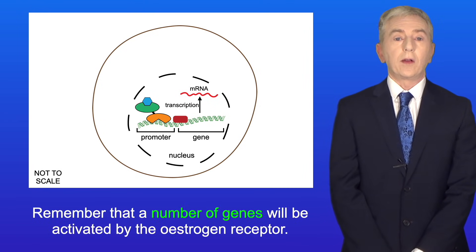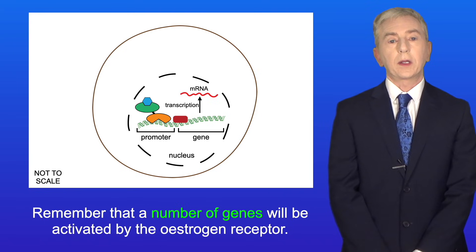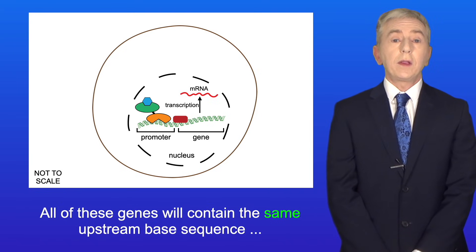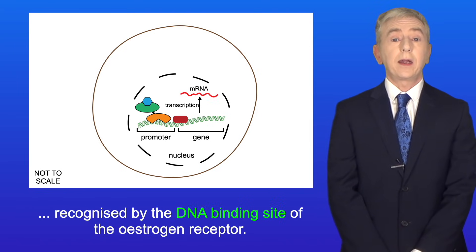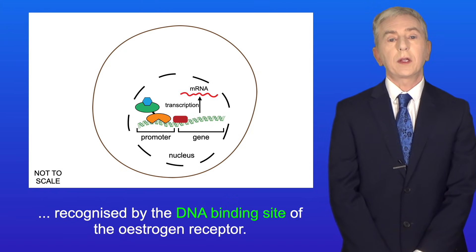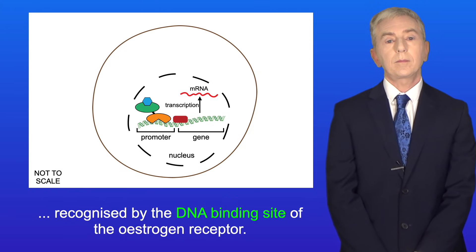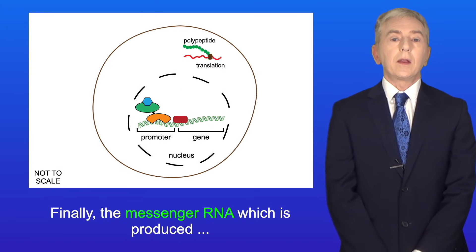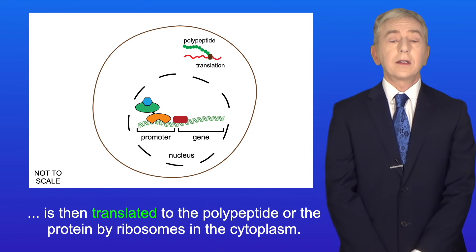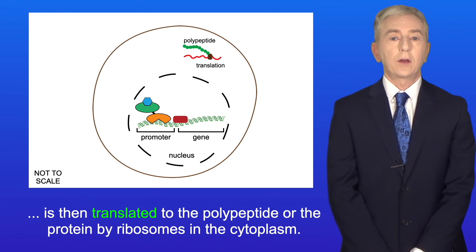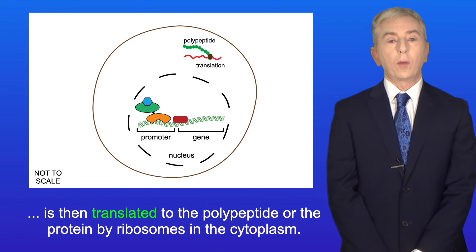Remember that a number of genes will be activated by the oestrogen receptor. All of these genes will contain the same upstream base sequence recognized by the DNA binding site of the oestrogen receptor. The messenger RNA which is produced is then translated to the polypeptide or protein by ribosomes in the cytoplasm.